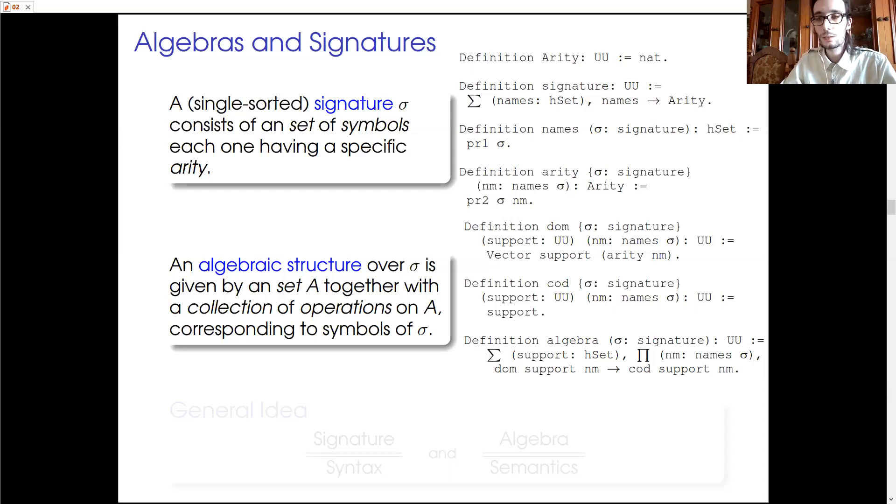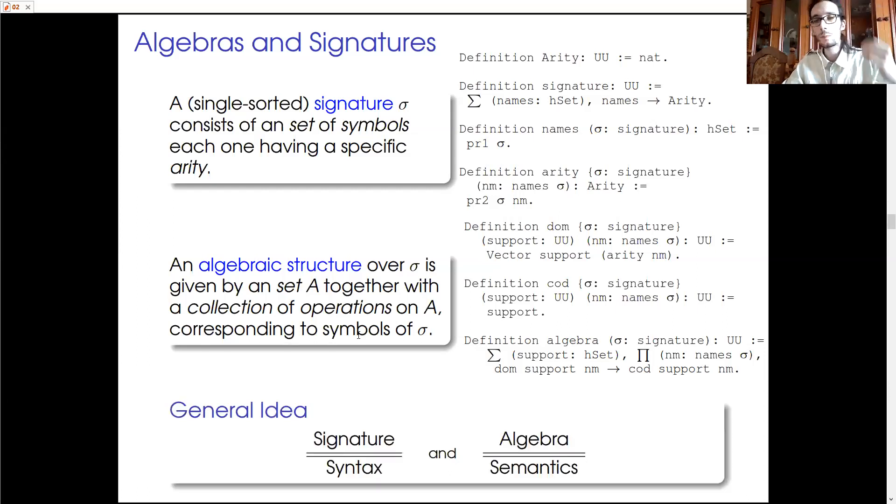And here, the type vector is defined so that a vector of n elements of A is judgmentally equal to an n-tuple of elements of A. And this allows UniMath to evaluate correctly many constructions that I'll talk about later. The general idea of this definition is the same as usual. A syntax for a language or a data type is captured by a signature while its semantics is given by an algebra.